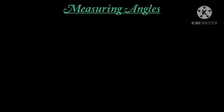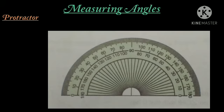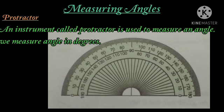So to measure angles, what instrument do we need? A protractor. You can see the picture. An instrument called protractor is used to measure an angle. We measure angles in degrees. So the protractor measures angles in degrees.